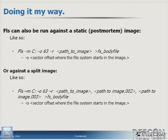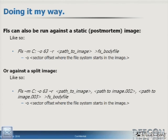FLS can also be run against a static or postmortem image. You use: FLS -M, name your device, add an offset where the actual file system starts — sometimes it picks it up by itself, sometimes you have to add it — -R for recursive, then point it at wherever your image is sitting, whether on a USB drive or local drive, and redirect to the body file. The sector offset can be found with the MMLS tool, also free and part of the Sleuth Kit. You can also run this against a split image — just list the parts: 001, 002, 003 — and it works the same way.